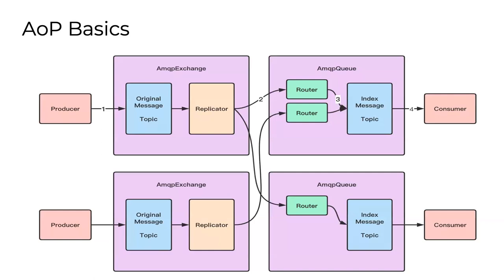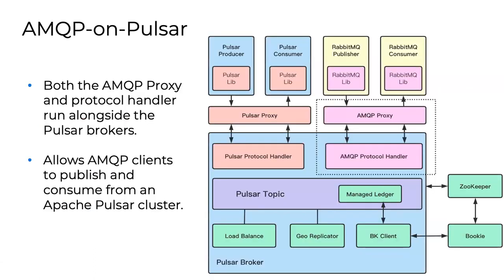AMQP has unique concepts: messaging queues, replicators, routers, and exchanges. There were some concepts we had to map to Pulsar, but we handle them quite well. Exchanges can map to different queues dynamically, allowing us to scale out and handle these things. We implemented it as a protocol handler — the AMQP protocol handler with proxy support. That way you can have an application using a RabbitMQ library and just change the URL to speak to the AMQP endpoint, and now you're using Apache Pulsar with infinite stream storage and pub-subscribe semantics.